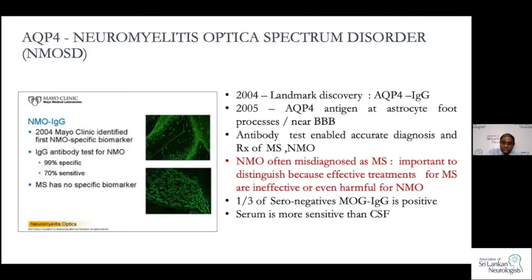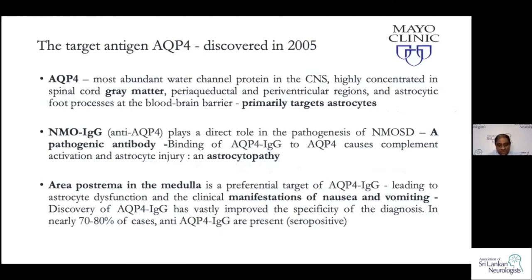Some seronegative patients have another antibody called MOG-IgG. The target antigen, discovered in 2005, is the most abundant water channel protein in the CNS — aquaporin-4 — highly concentrated in the spinal cord gray matter. This primarily targets astrocytes, which is why NMOSD is sometimes known as an astrocytopathy rather than a demyelinating condition. NMO-IgG or aquaporin-4-IgG likely plays a direct pathogenic role.